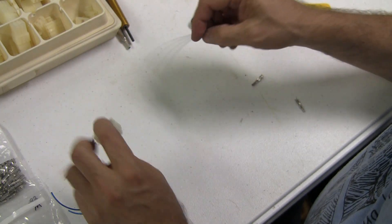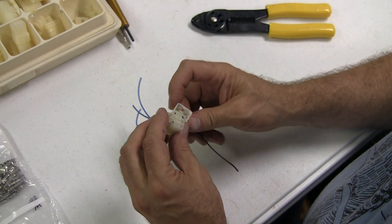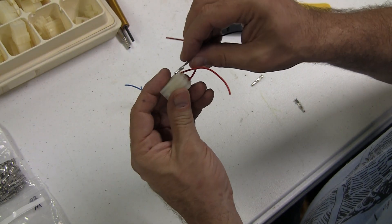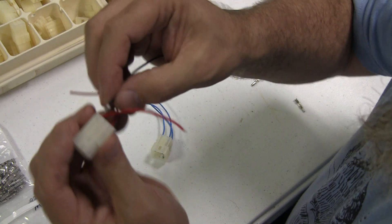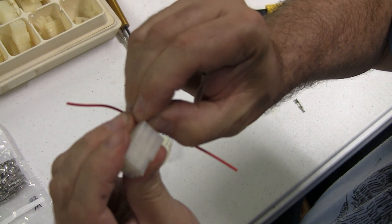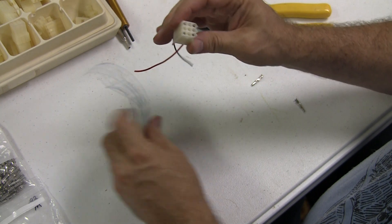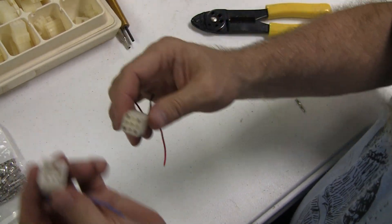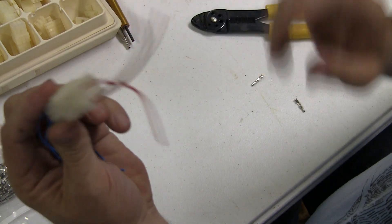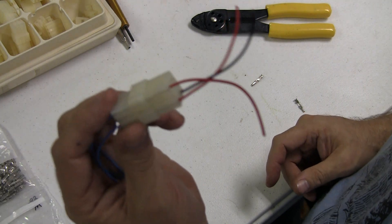So we'll do the same thing with the female. We'll push this in until we hear it click, and now that's in there. And so there's our rebuilt, repinned connectors. We can push them together, and we've got a nice, good, solid connection.